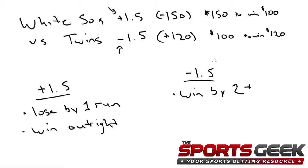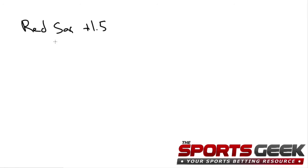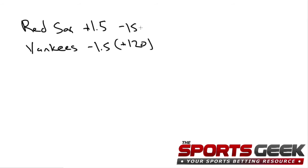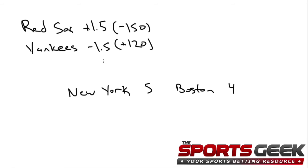Let me erase this and we'll take another quick look at the run line. In this example we'll go with the Red Sox as the underdog on the run line and the Yankees at minus 1.5. Let's say we have a final score of New York five, Boston four. Although New York won the game, they actually aren't covering the run line — Boston is only losing by one, so since they're getting one and a half runs, the winning wager on the run line is actually going to be the Red Sox. If you're betting New York on the money line you would win, but here since they have to win by two or more, it's actually Boston on the run line that would win.